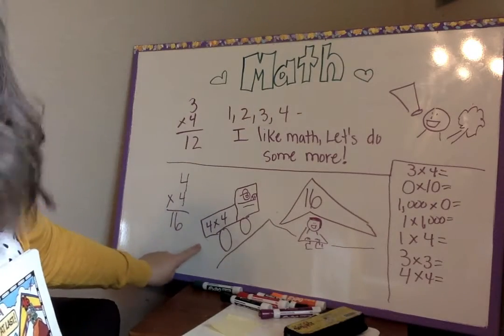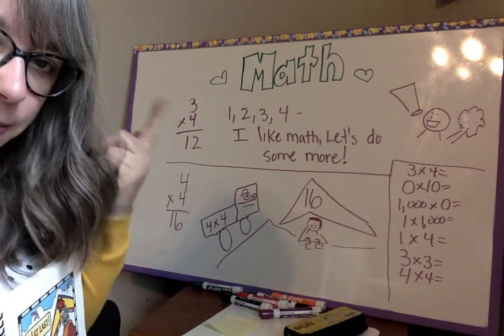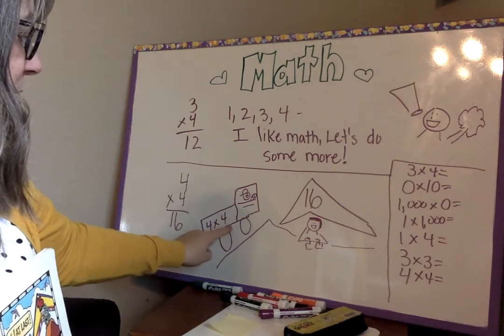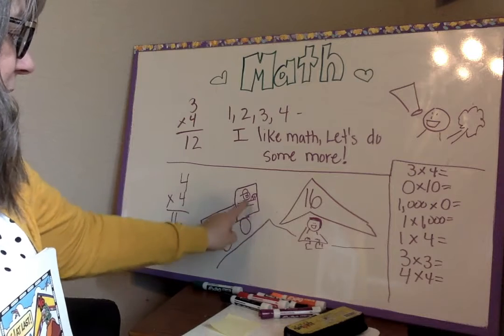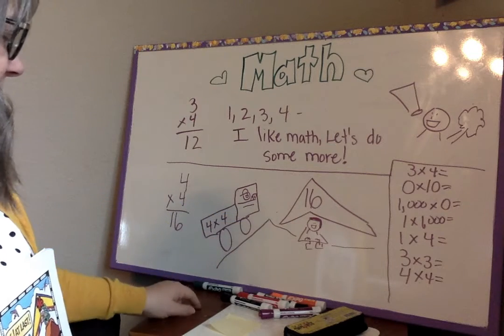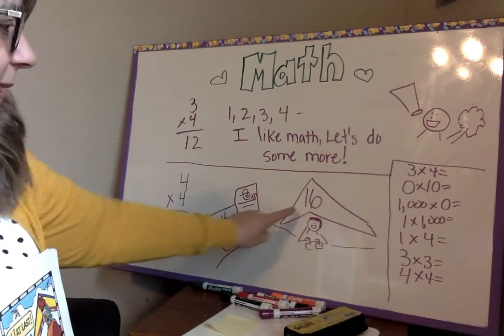So here we are. Here's our picture. Just to remember, I want you to visually think about this. Four times four is sixteen. Here's Bart. He's driving his car and he has to be sixteen to drive. So four times four is sixteen.